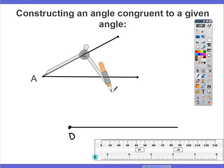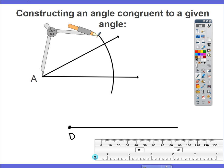So I'm going to go down here, draw my arc. Wherever that compass intersects with the angle, I'm going to label those points B and C.